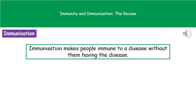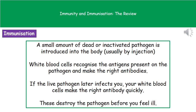Something we've all experienced is immunization. The whole idea behind immunization is to make someone immune to a disease without them actually having to have it. You might know immunizations more commonly as vaccinations. What we're doing is injecting a small amount of that particular pathogen so our body builds up immunity without us getting ill. The vaccine is produced using small amounts of either dead or inactivated pathogen. Once that's present in our blood, the white blood cells recognize the antigens present on that pathogen.